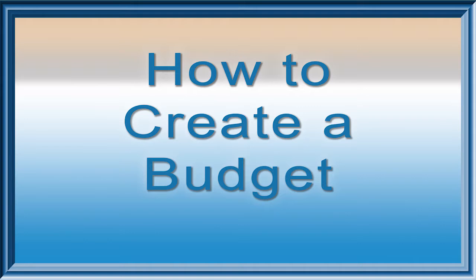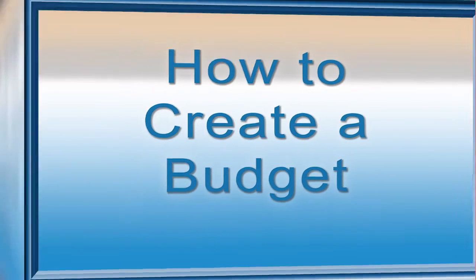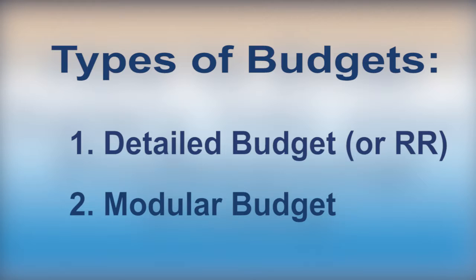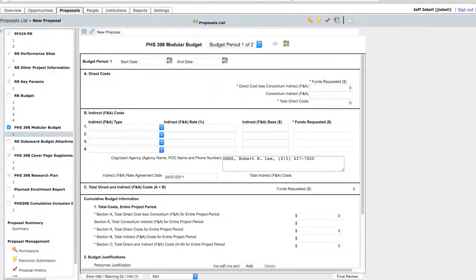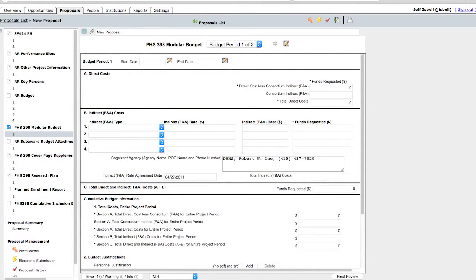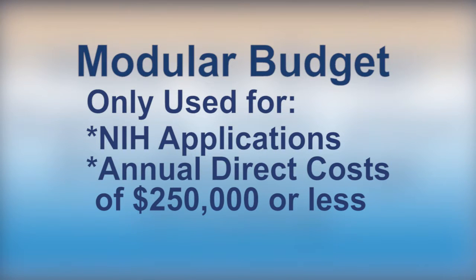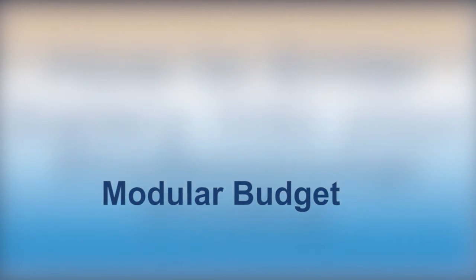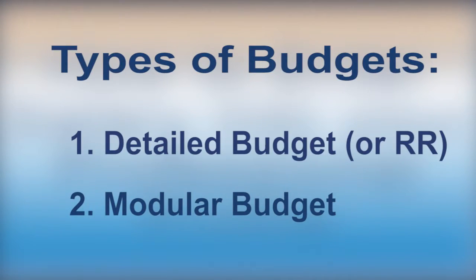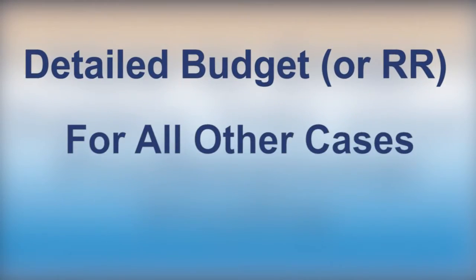This section explains how to create a budget in Cayuse. We're going to talk about two types of budgets: the detailed, also known as R&R budget, and the modular budget. Modular budgets are only used for NIH applications in which the direct costs for each year of the project are $250,000 or less. In all other cases, you'll just need to use the R&R detailed budget forms.